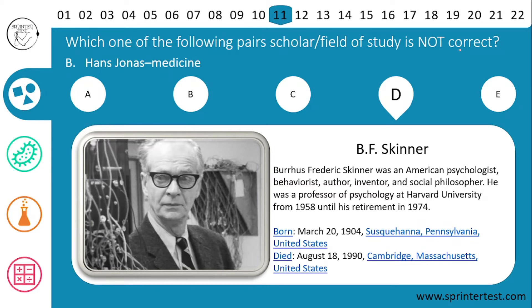If there is a mistake in my pronunciation, kindly comment so I can correct it for future videos. Moving to D, BF Skinner was an American psychologist, behaviorist, author, inventor, and social philosopher. He was a professor of psychology at Harvard University from 1958 until his retirement in 1974. So his name also matches his field.